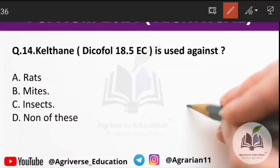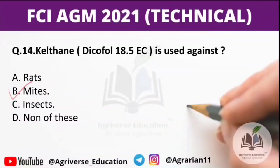Question 14: Kelthane, also known as dicofol 18.5 EC, is used against which pest? Options include red mites and insects. The right answer is option B — mites. So, Kelthane (dicofol) is used against mites.